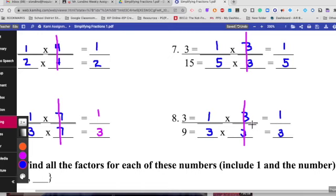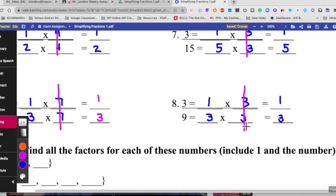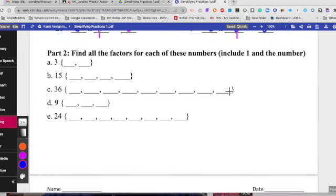So, now, go back and make sure you have all the top ones done. Okay, now, we're going to start part 2, which is finding all the factors of each of the numbers. You need to include 1 and the number.